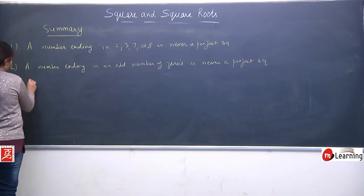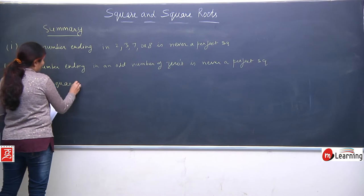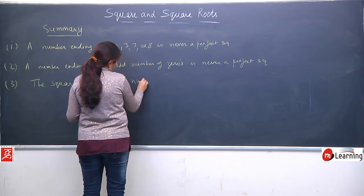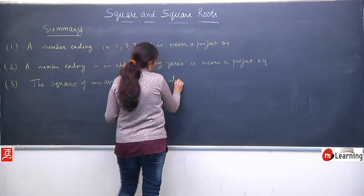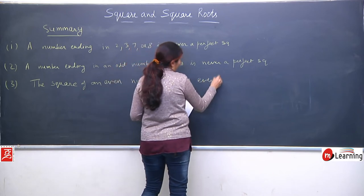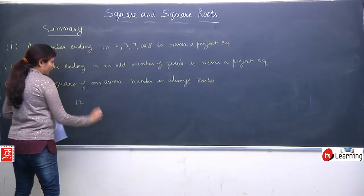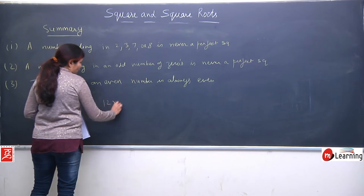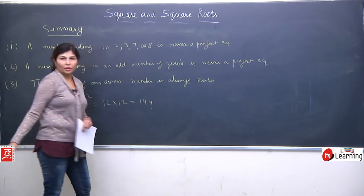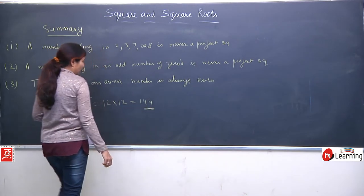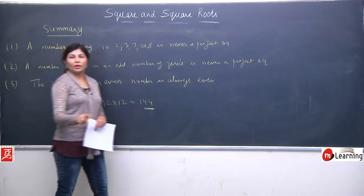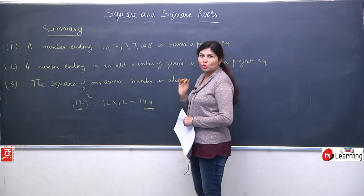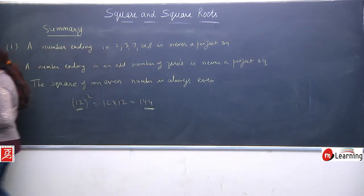Third property: the square of an even number is always even. For example, 12 is even, and 12² = 144, which is also even. You can check with any even number — the square will always be even. This is an observation-based property you can verify yourself.